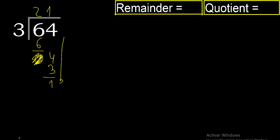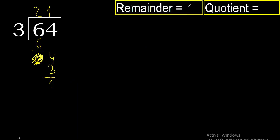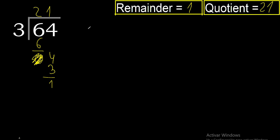There is no number that goes down, therefore we finish. The remainder is 1, and the quotient is 21.